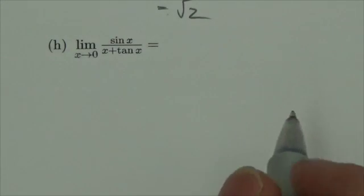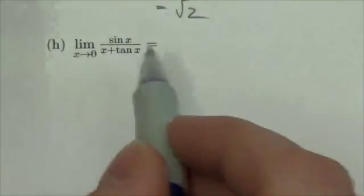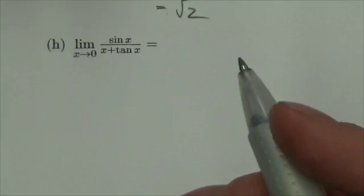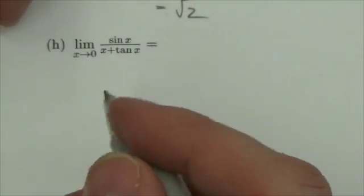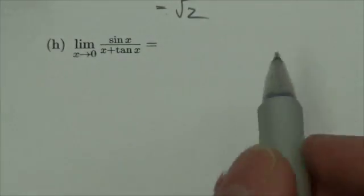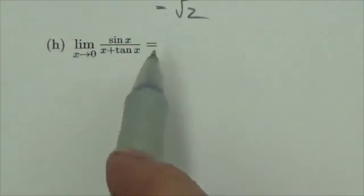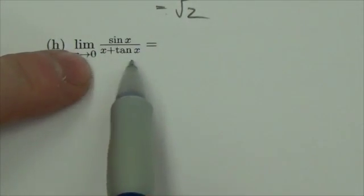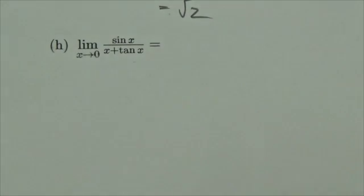Okay, hi everybody. We're working through the trig review for Math 31, this is question 1h. In a question like this, I'm looking for the identity sine of x over x going to 1. Now I can see sine of x over x doesn't exactly work because it's x plus the tangent of x.